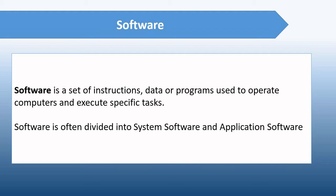Application software is designed to fulfill a specific function or set of functions. It includes word processing, web browsing, and almost all other tasks for which you might install software. Examples of application software are Microsoft Office, Photoshop, and games which you can find in your app store. Once installed, application software does not start running until the user issues a command.